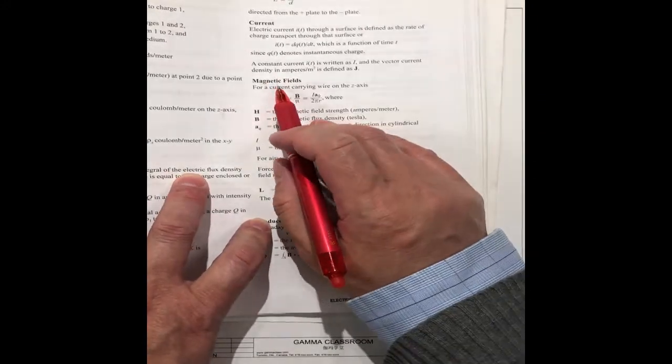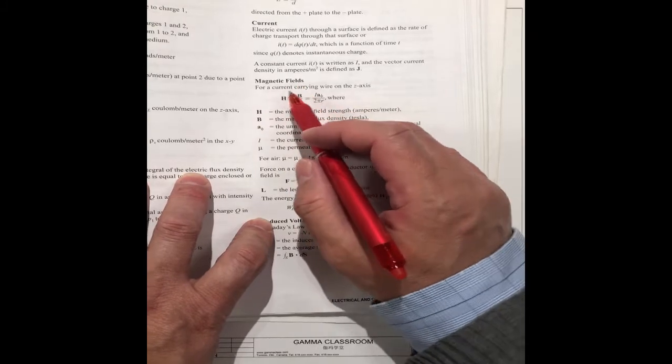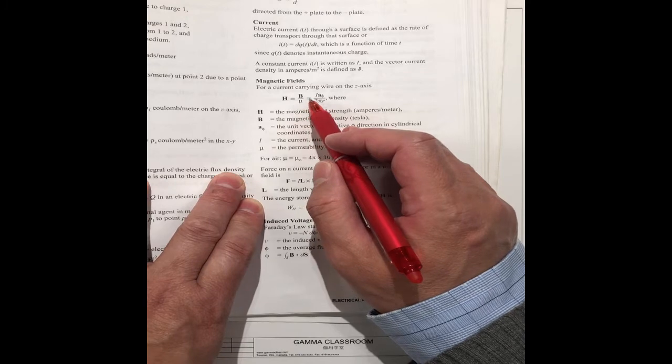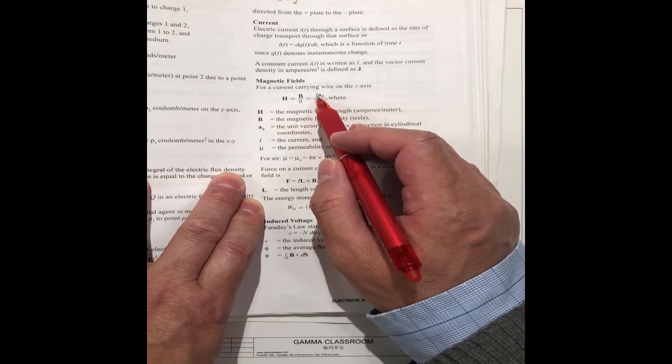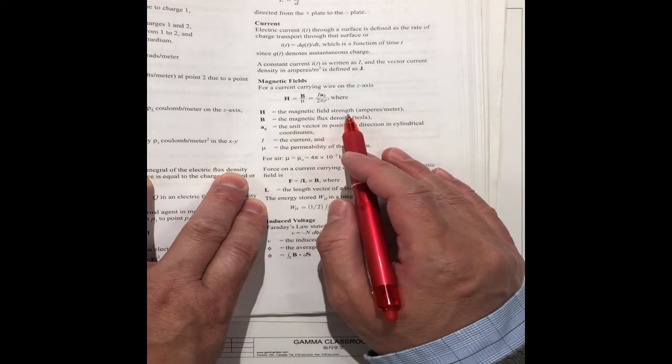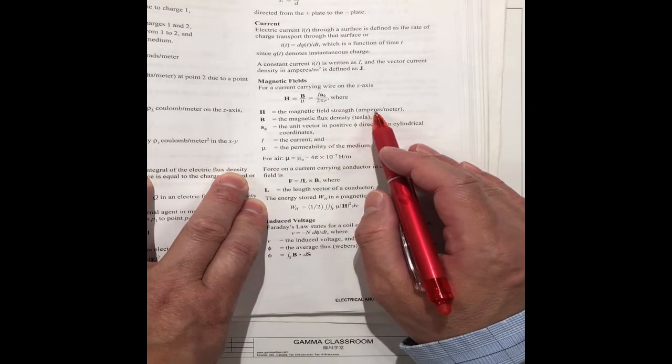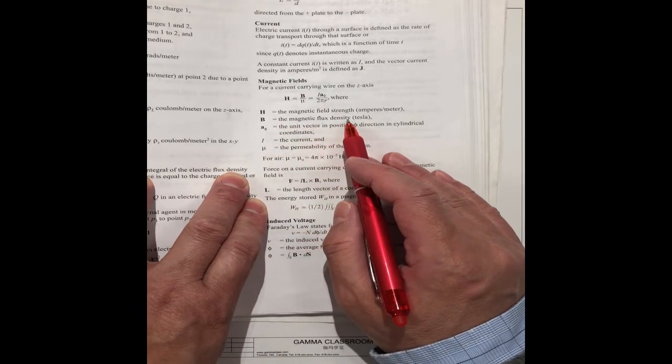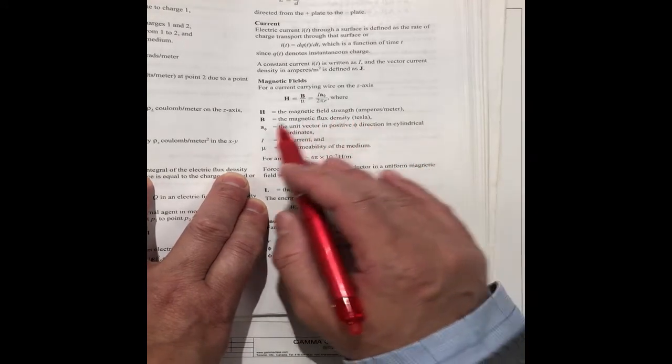The magnetic field is H equal to B divided by mu equal to the current I. The H is the magnetic field strength, it is called amperes per meter. The B is the magnetic flux density, called the tesla.